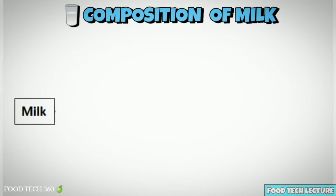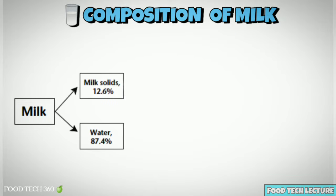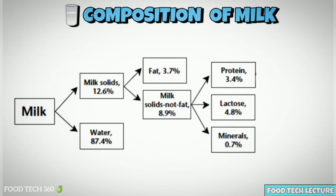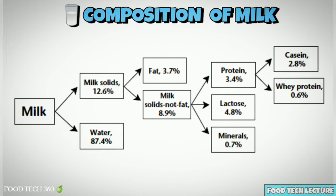Now let's see the composition of milk. Milk contains mainly 12.6% milk solids and 87.4% water. Milk solids are composed of 3.7% fat and 8.9% SNF. SNF consists of 3.4% protein, 4.8% lactose, and 0.7% minerals. There are two types of proteins present in milk: casein and whey. Milk contains 2.8% casein, which is a slow-digesting protein, and 0.6% whey, which is a fast-digesting protein.